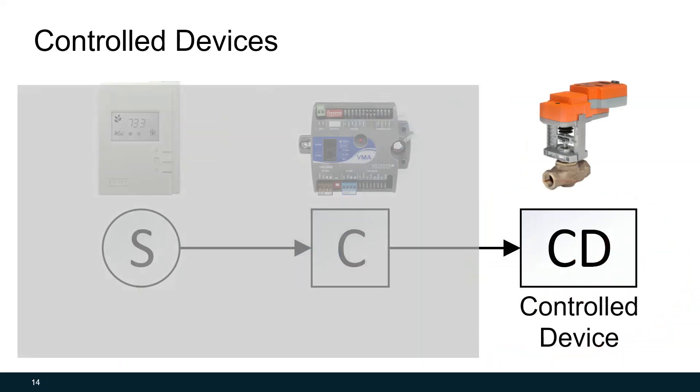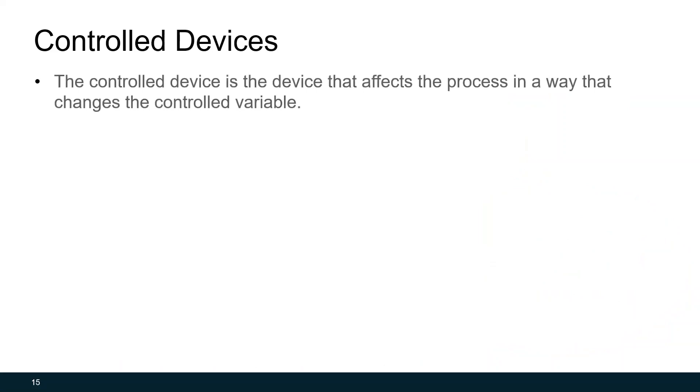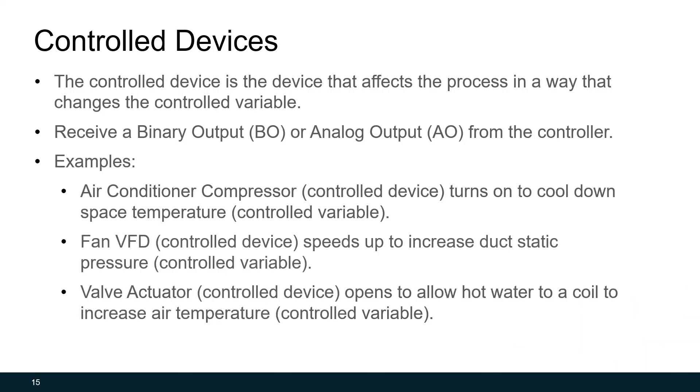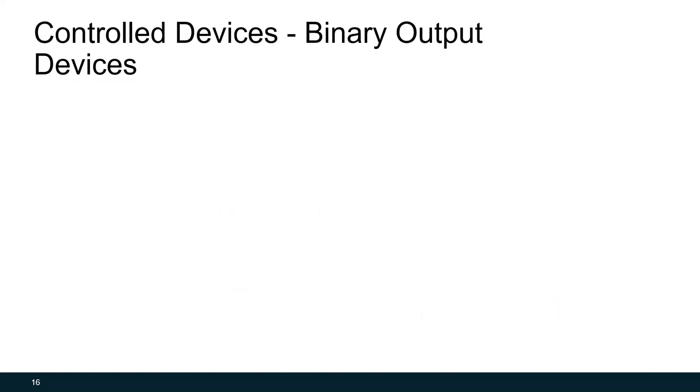The last part of the control system is the control device. The control device is simply the device that affects the process in a way that changes our controlled variable. And these receive binary outputs or analog outputs. Some examples of control devices affecting the controlled variable would be your home air conditioning unit, which has a compressor. We can turn that on to cool down space temperature. Perhaps we have a fan with a variable frequency drive or VFD, and we want to speed up that fan to increase duct static pressure to increase the flow rate through our system. Or, as in our previous example, we have a valve that needs to open to allow hot water to a hot water coil to increase air temperature.